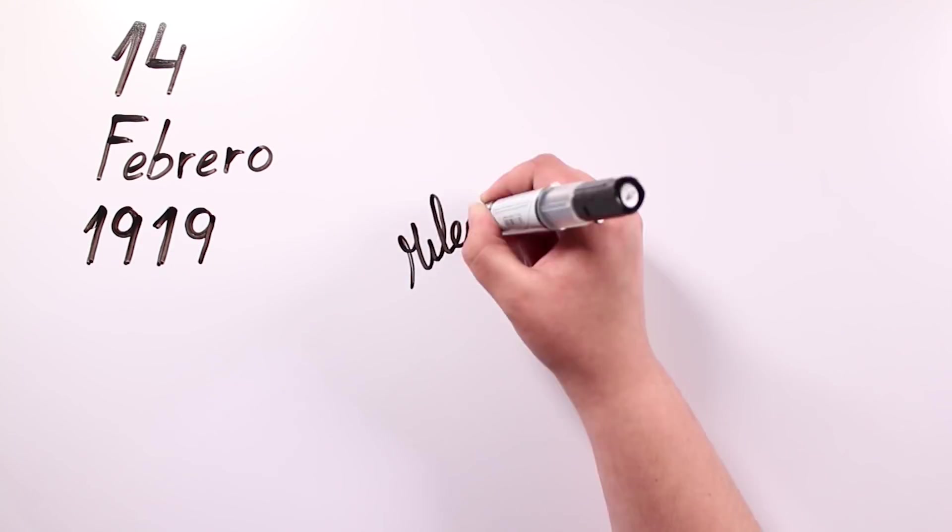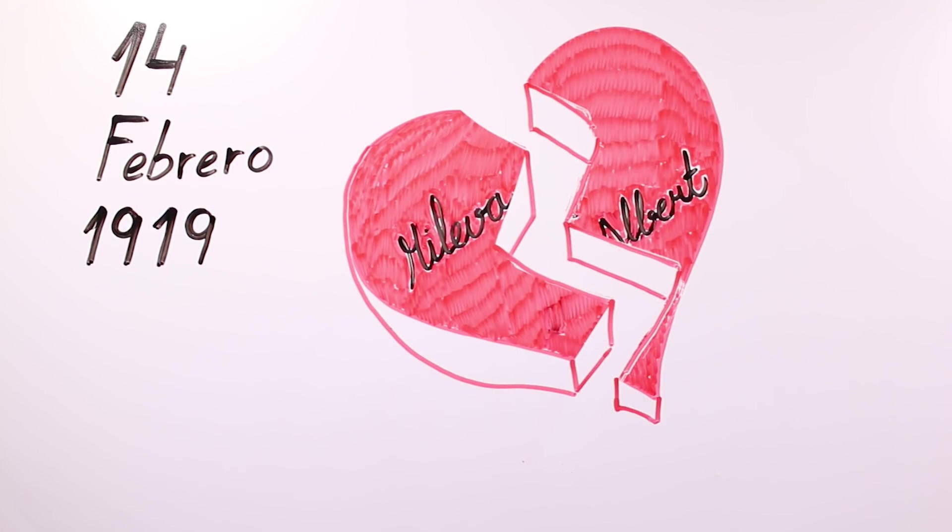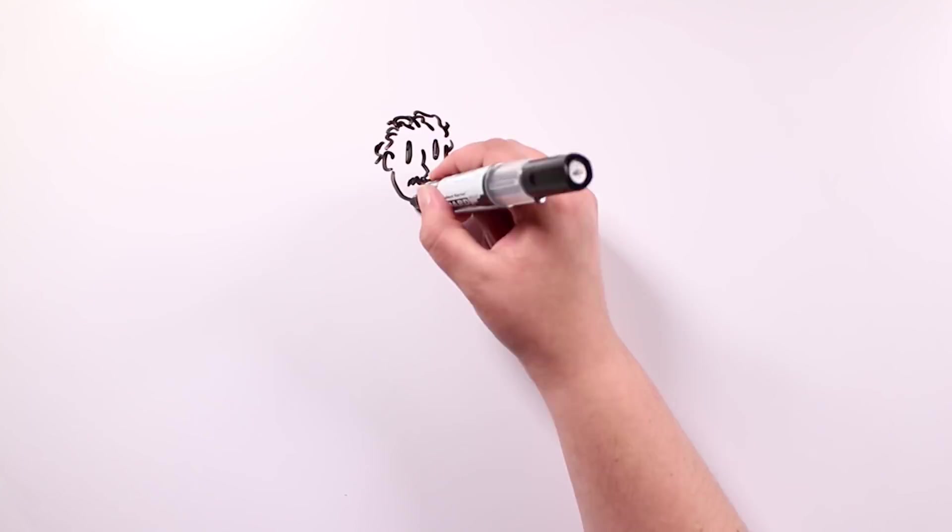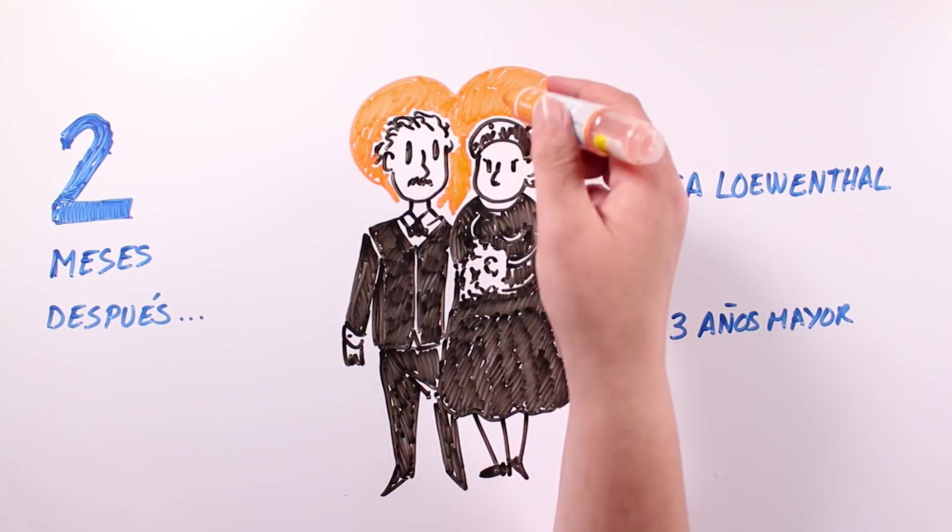On October 14th, 1919, he divorced Mileva Merrick, and two months later he married his cousin Elsa Lowenthal. Yes, you've heard right, his first cousin!